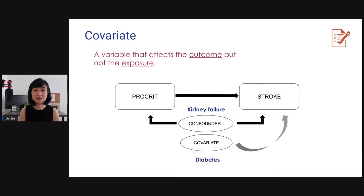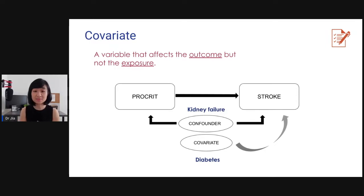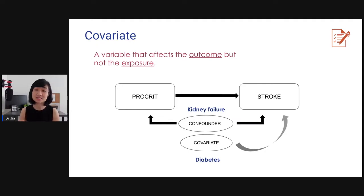The next word is covariate. A covariate is a variable that affects the outcome but not the exposure. In this example, diabetes is a covariate because diabetes does not really increase somebody's need to use procreate, but it is a cardiovascular risk factor, so it increases somebody's risk of stroke. So it affects the outcome but not the exposure.